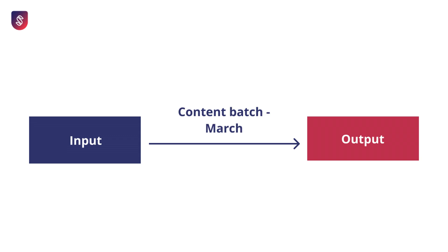So if you want to create content for the next week or month, you need to know what the output needs to look like so that you can decide what input you need. Let's say that you are planning a content batch for the month of March — you want to create all your March content in one go. The output will be all the content, all the social media posts, blog articles, YouTube videos, and so on, everything that you want to create in March. And if you know what the deliverables should be, you can destructure those and work backwards to understand what the input needs to be.